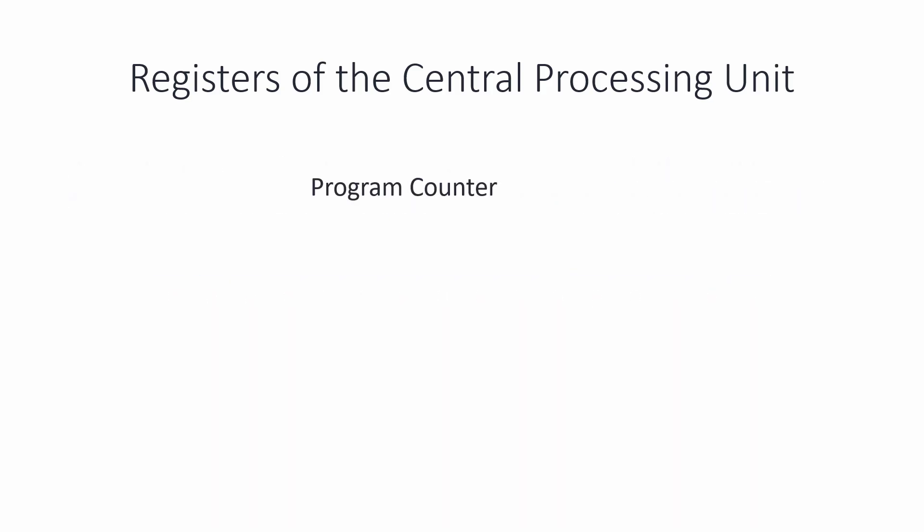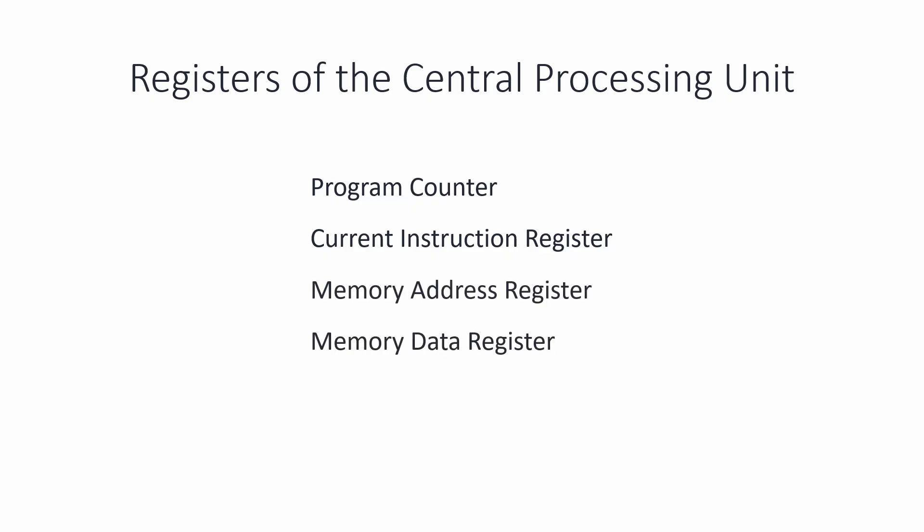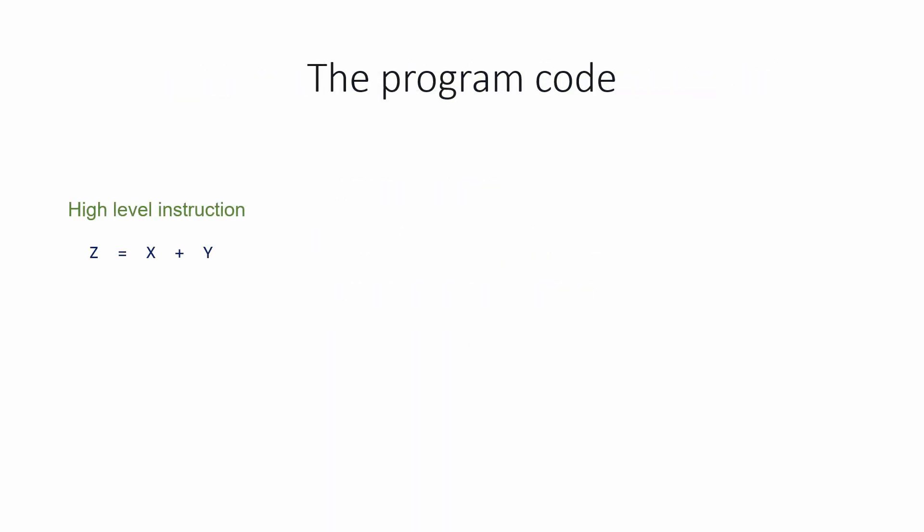These are the names of the CPU registers that we're going to visualize in action. If you're a student of computer science, you should be able to describe the purpose of each of these and you should know what each one might contain. To see how these registers interact with each other, we're going to look at the execution of only a small fragment of a computer program.